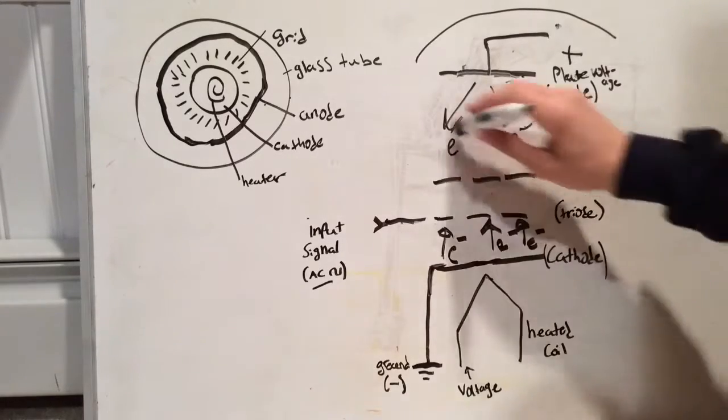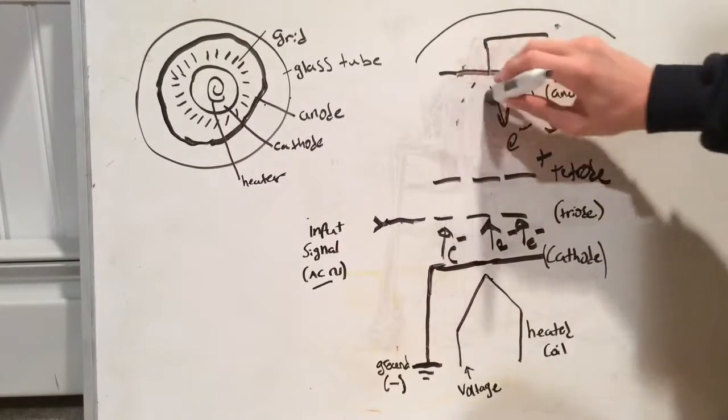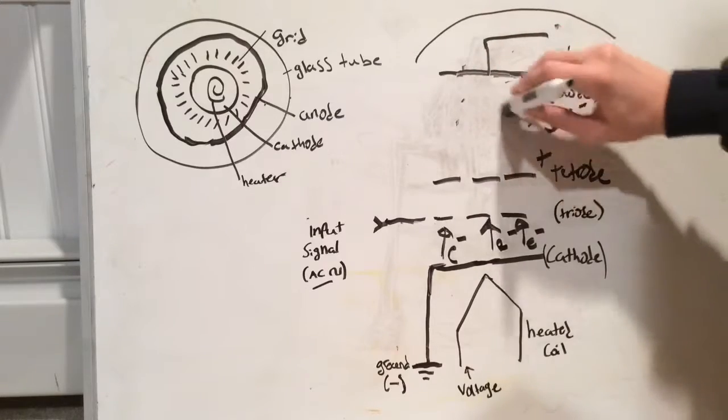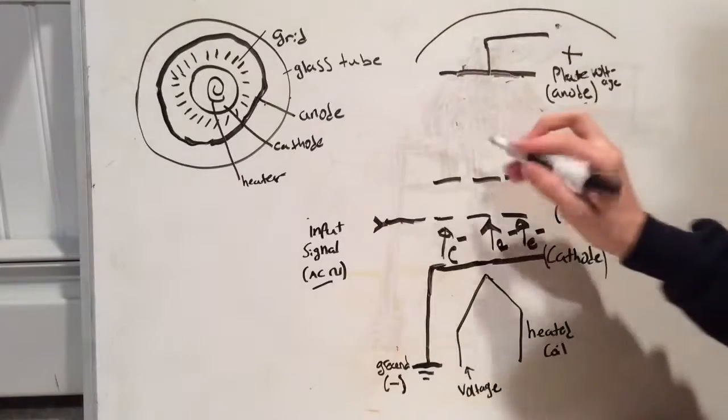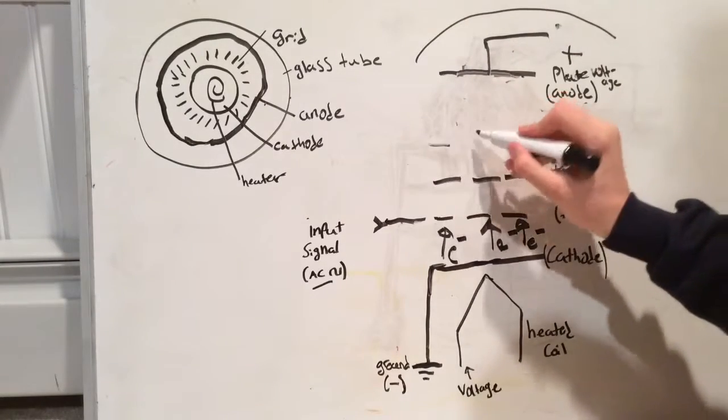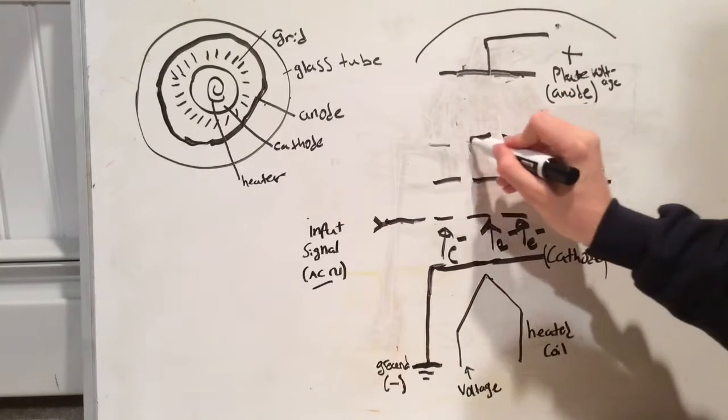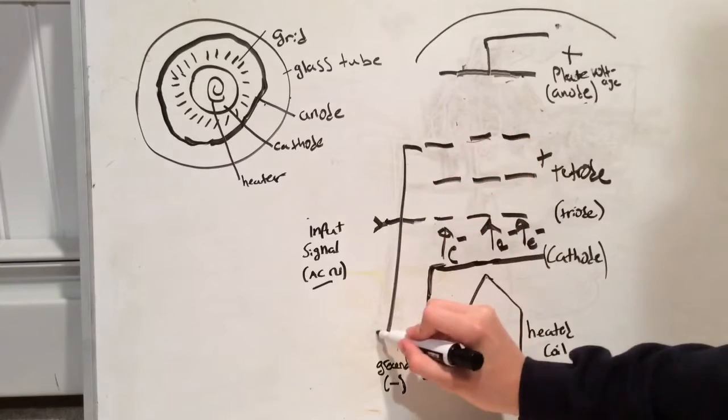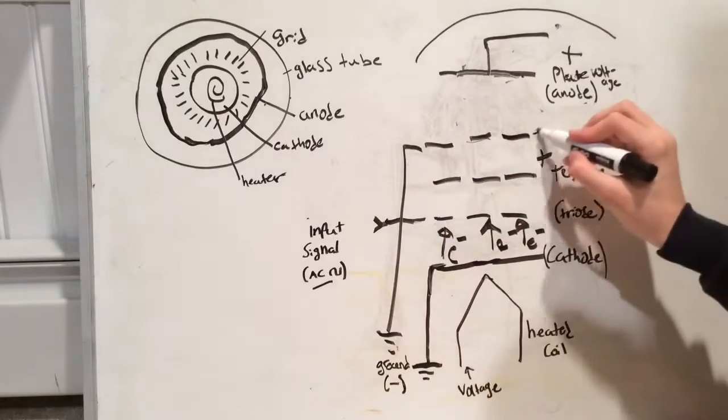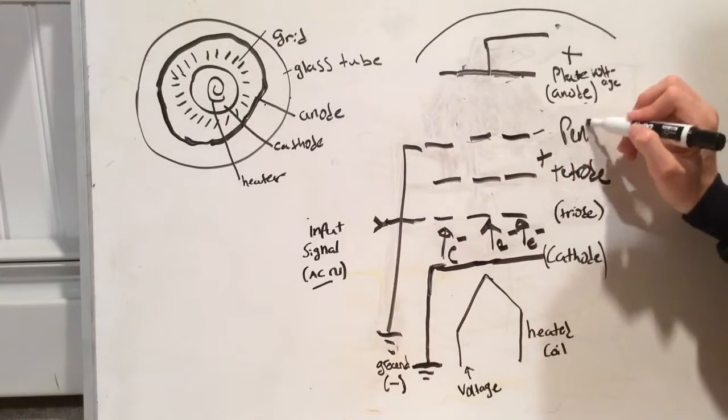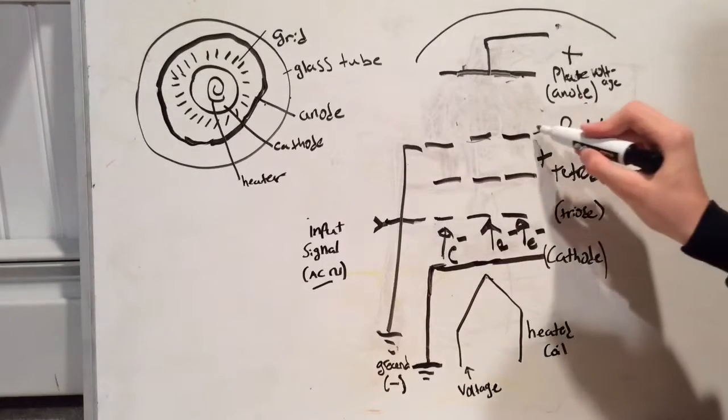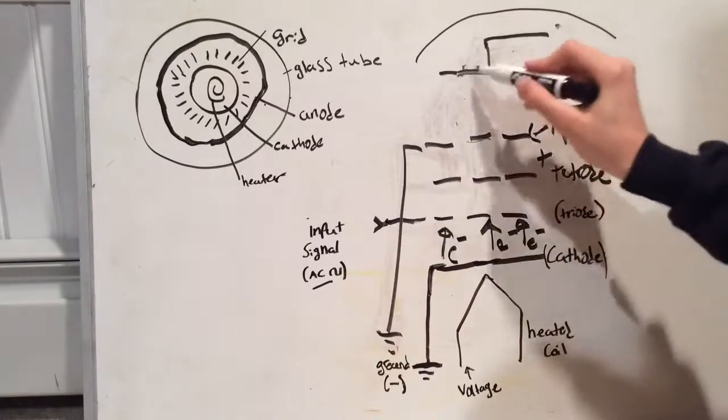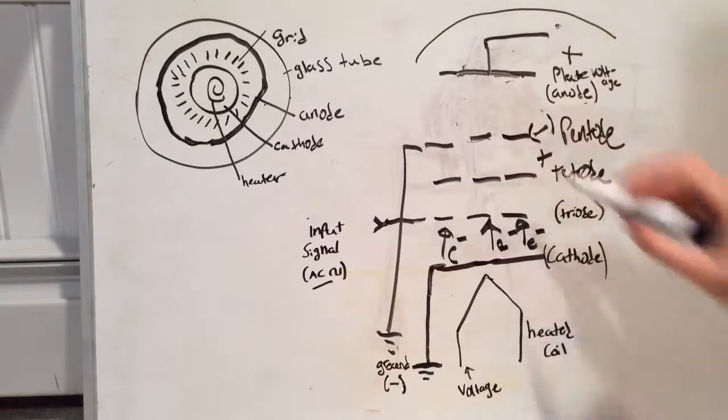So you can't have that. So to improve that we look at our most complicated tube of today, for now at least, called the pentode. The pentode is now a five function tube and it's grounded. So that means it's negative.